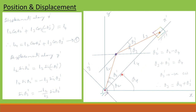Now let us derive equations along x prime and y prime axis. Displacement along x prime can be written as L2 cos theta 2 prime plus L3 cos(minus theta 3 prime) equal to L4. Since cos(minus theta 3 prime) equals cos theta 3 prime, from this we can write: L4 equal to L2 cos theta 2 prime plus L3 cos theta 3 prime. Let us call that equation 1.